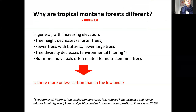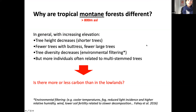In the mountains, trees tend to be shorter because of environmental conditions — it's more windy on the ridges, there's more fog and reduced light incidence, and the fertility of the soil is also lower because of slower decomposition rates related to both waterlogging and reduced temperatures. So we have shorter trees, fewer extremely large emergent trees, and tree diversity also decreases because of environmental filtering.